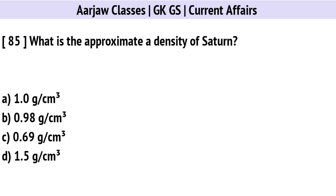What is the approximate density of Saturn? Correct option is C: 0.69 grams per cubic centimeter.